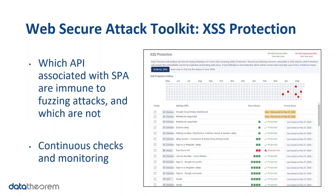Cross-site scripting, our last attack toolkit, checks if any APIs associated with the SPAs in your application are privy to fuzzing attacks. Fuzzing is a black box software testing technique which basically consists of finding implementation bugs using malformed or semi-malformed data injection in an automated fashion. It involves inputting massive amounts of random data, called fuzz, to the test subject in an attempt to make it crash. Cross-site scripting attacks occur when an attacker uses a web app to send malicious code, generally in the form of a browser-side script, to a different end user. We make sure that this is not feasible in your application.